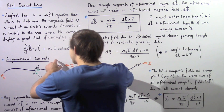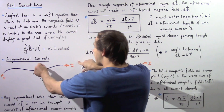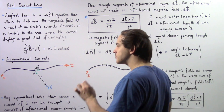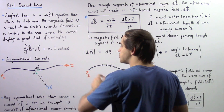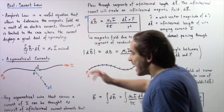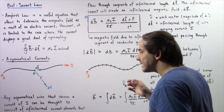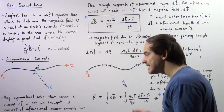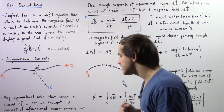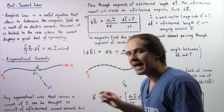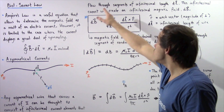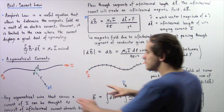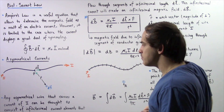Suppose we have a wire given by the following asymmetrical region. This wire carries an electric current as shown by the orange arrow. Any asymmetrical wire carrying an electric current I can be thought to consist of infinitely small segments of current — known as current elements — that flow through segments of infinitely small length DL.